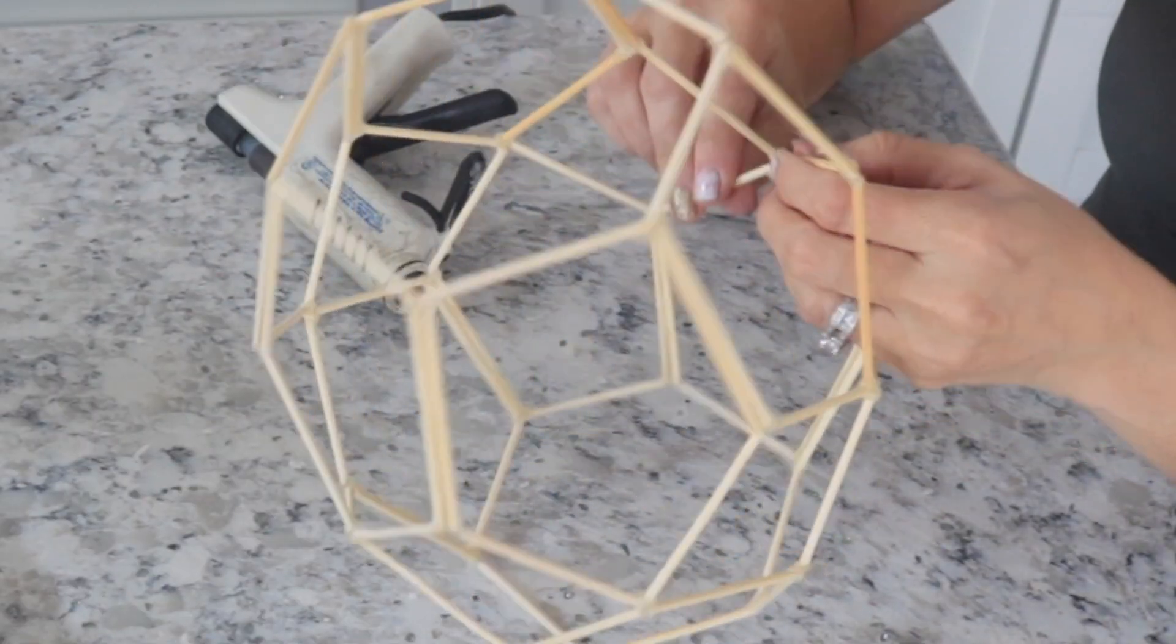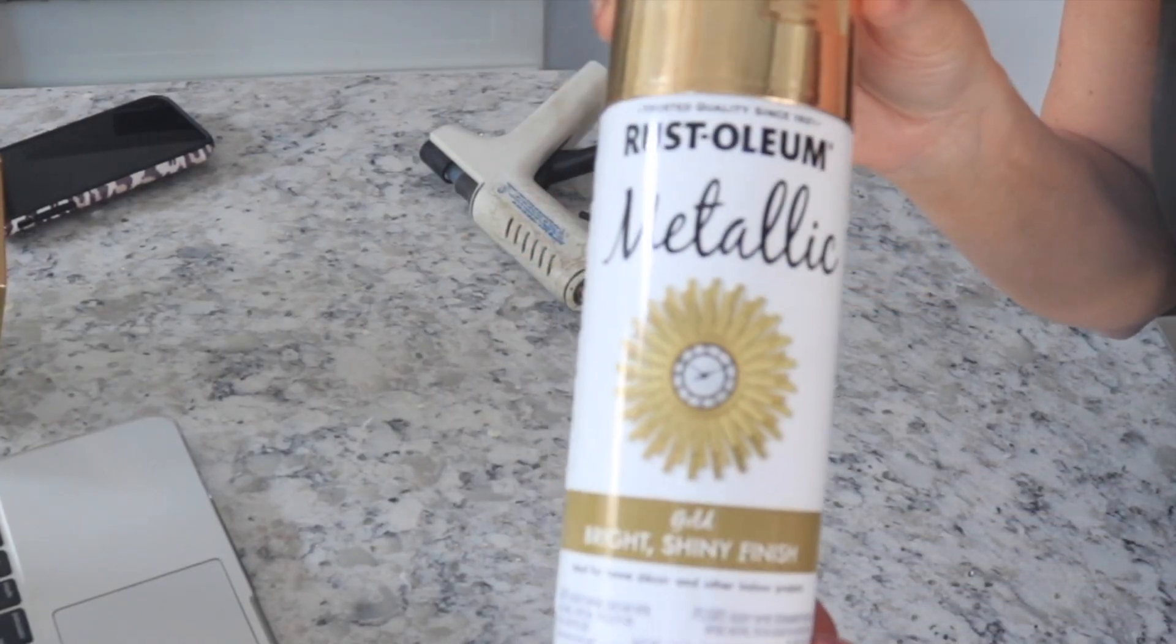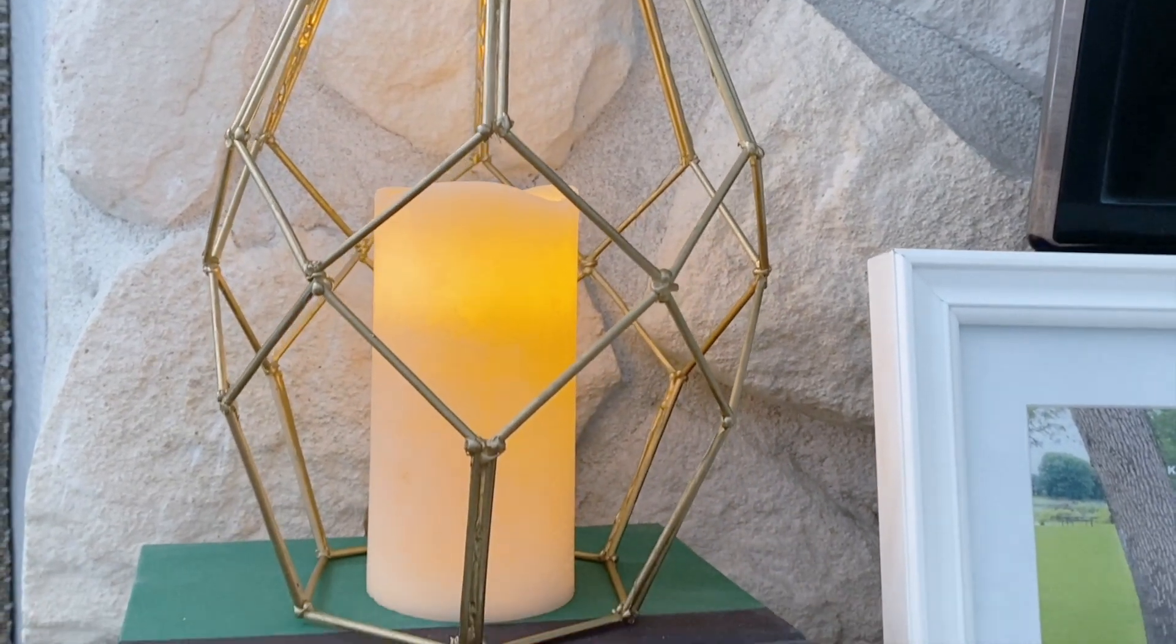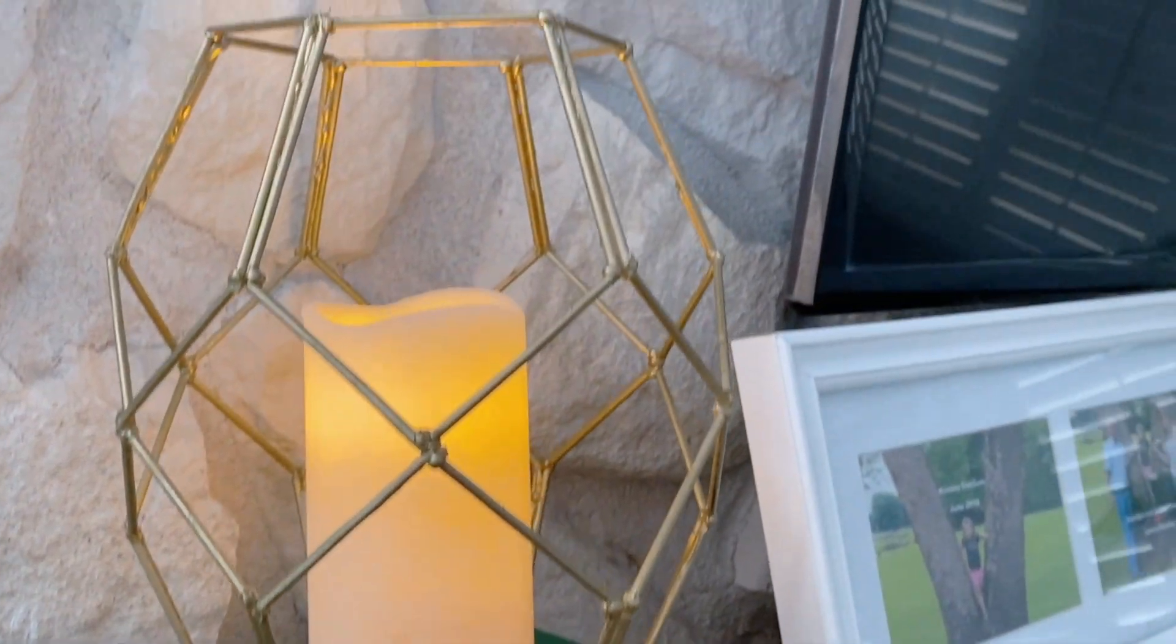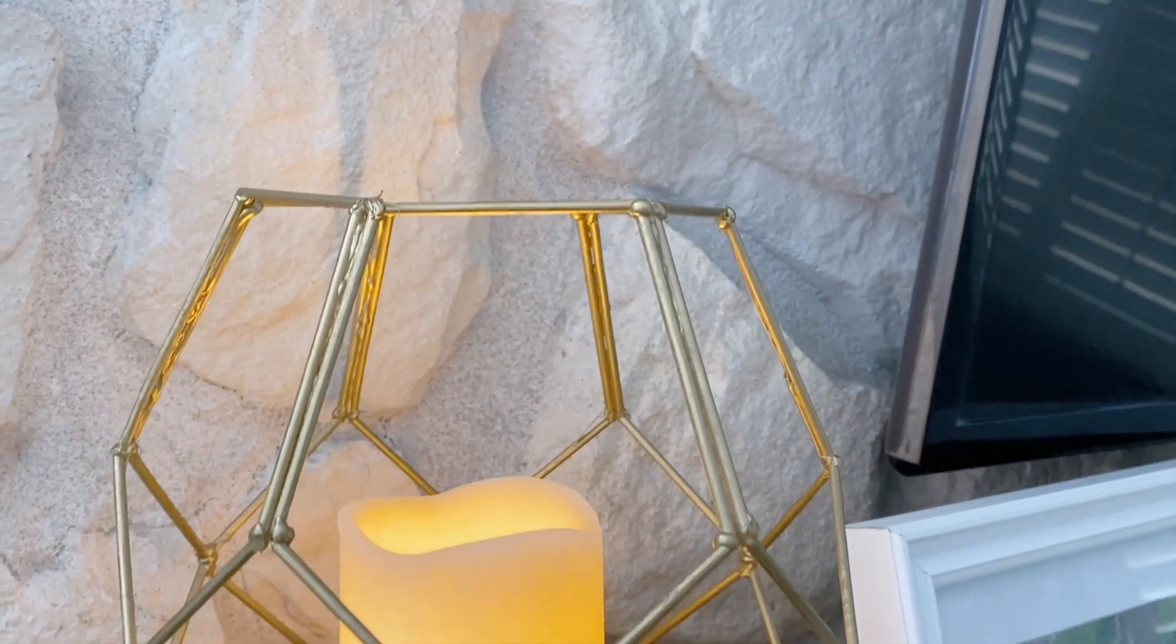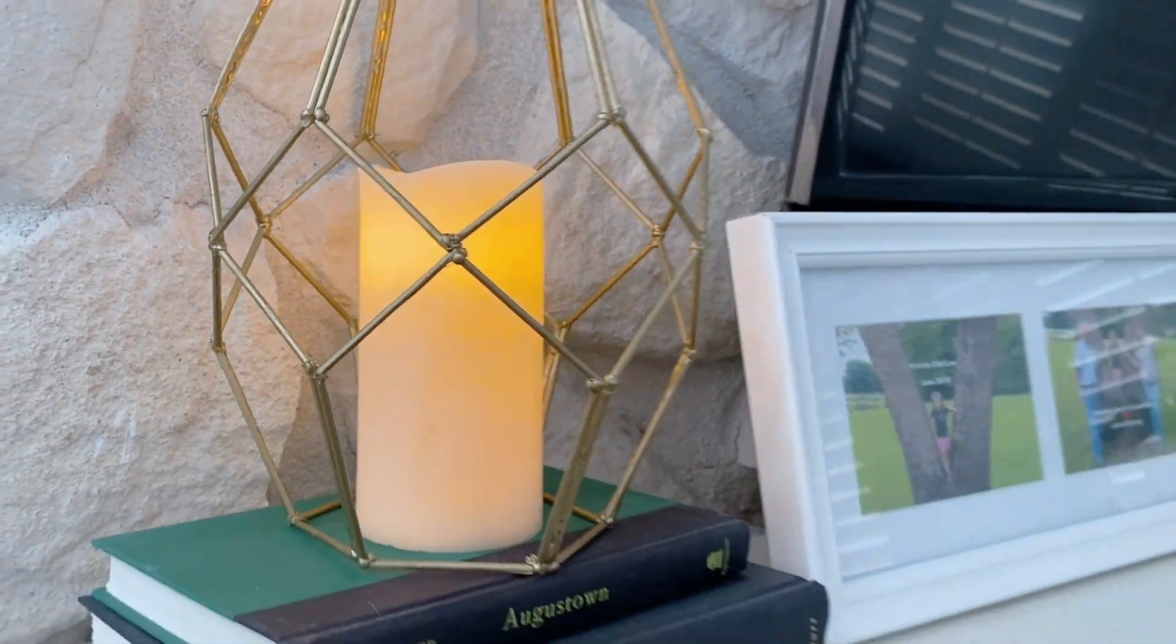And then once I had them all glued together, I just went outside and sprayed them down with my Rust-Oleum metallic gold and this is how it turned out. I think this turned out so cute. I love it. I actually have one that looks a lot like this. I was kind of just trying to make a duplicate. So I think I'm going to give this one to my mom.